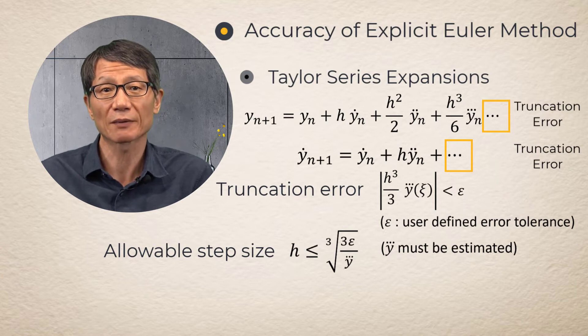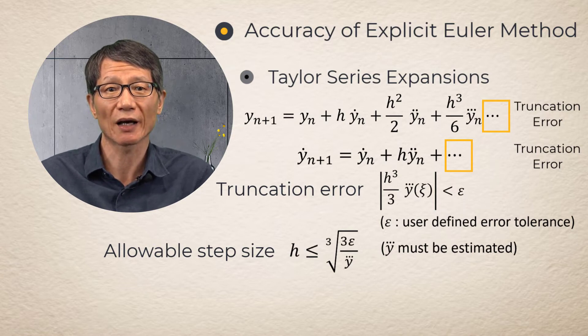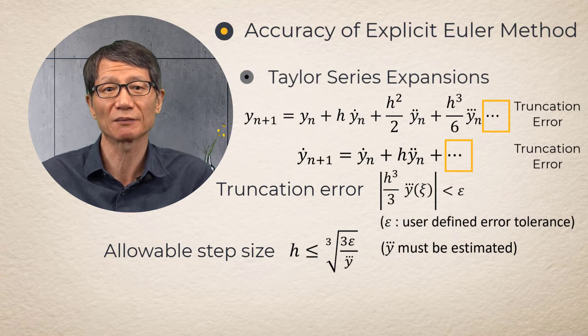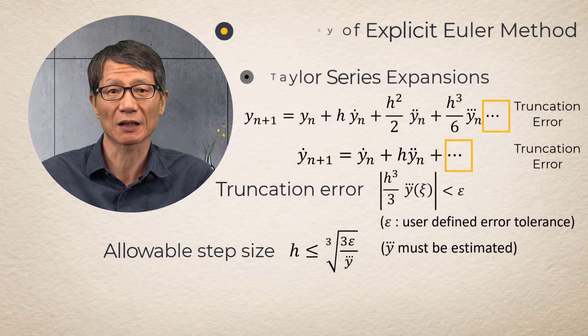The third time derivative in the truncation error can be estimated from the divided difference of the second time derivative before and after a time increment.